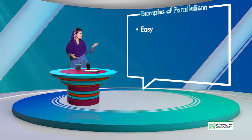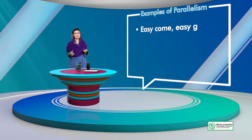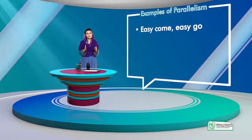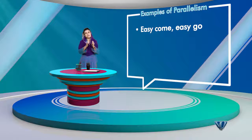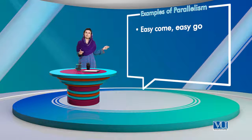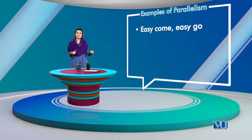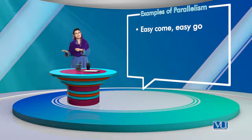Some examples: Parallel Structure means that in one sentence, one grammatical pattern is followed. Like 'easy come, easy go.' The thing comes easily, and it goes easily just as fast.